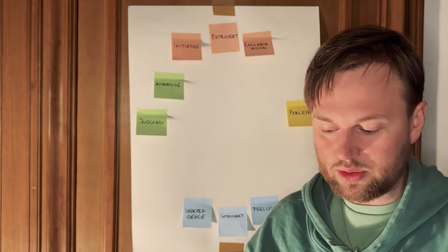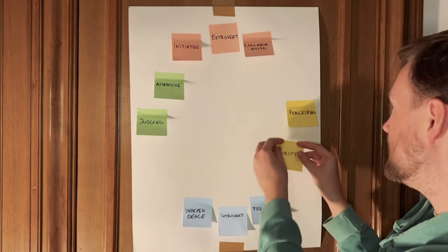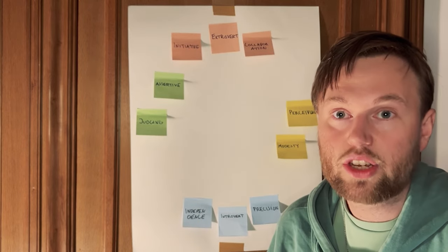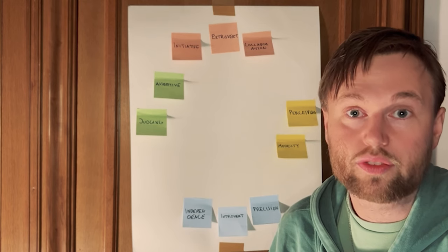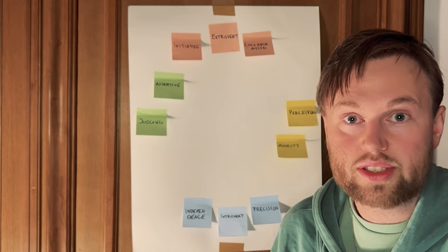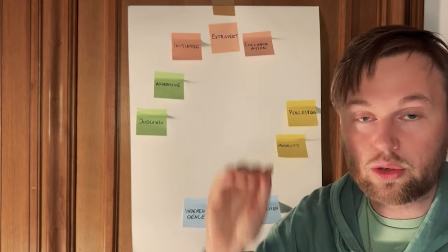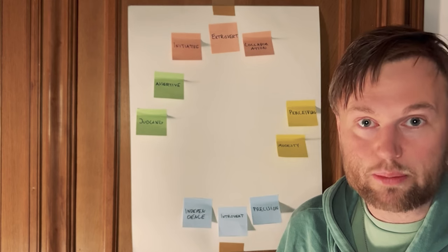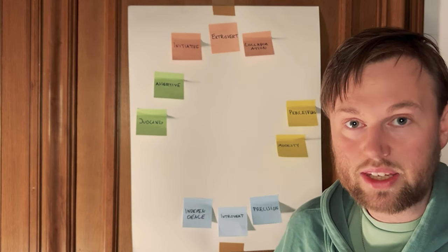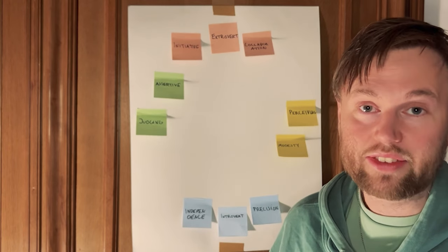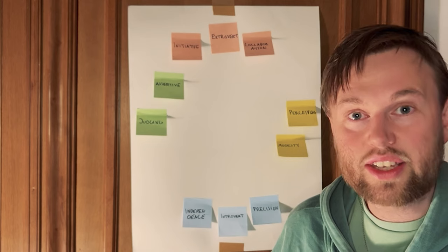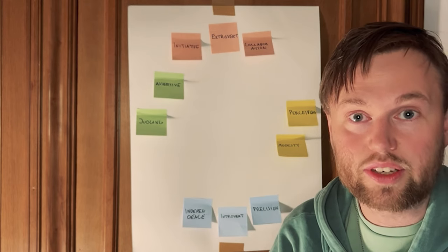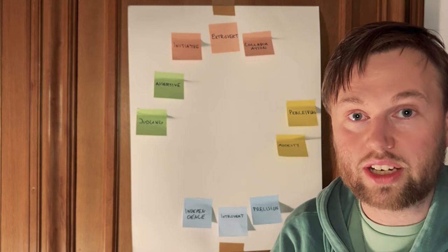We can compare assertiveness to modesty, found in perceiving types. With modesty, you tend to have a lower opinion of your own capabilities and goals. Modest people set less ambitious goals and are more careful about how they present their ideas and opinions to a group — speaking in more ambiguous terms, showing more uncertainty, and asking more questions. This allows them to ensure things get done correctly, but it can also cause them to struggle to speak passionately and assertively, causing their opinions to fall behind.